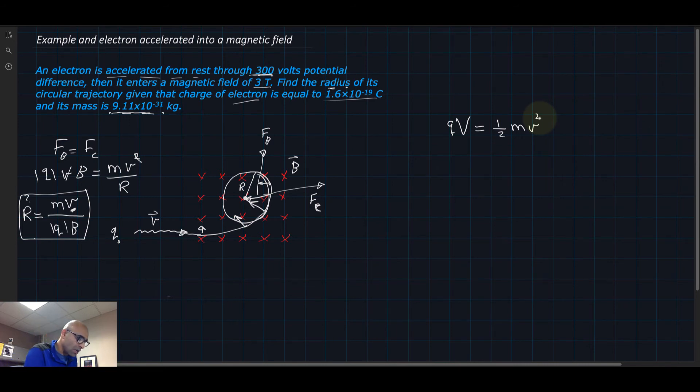That's how the equation of energy works. All the potential energy is changing to kinetic energy because the electron was accelerated from rest. Now look, this is V for the voltage—notice how big that is.